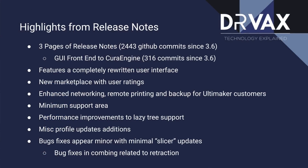In this particular release, there were actually over 2400 commits to GitHub. GitHub is the repository used to store Cura and many other open source projects. A commit is not necessarily a change — a commit is an update to at least a line of code that's part of a bigger change. So that doesn't imply there are 2400 changes, but there was a lot of work done in about the last year since version 3.6.